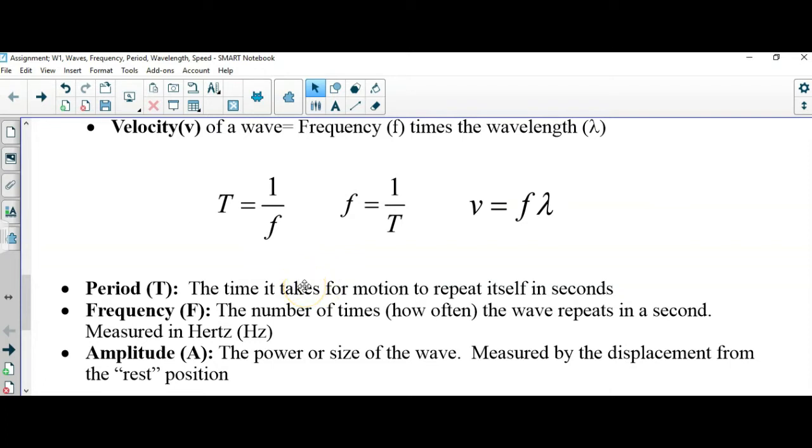Frequency: the number of times or how often the wave repeats per second. Frequency and period as you can see here are inversely related. The more waves you have, the less time each one takes, and conversely the less waves you have, the more time each one takes.